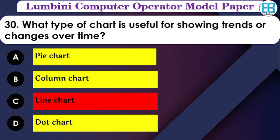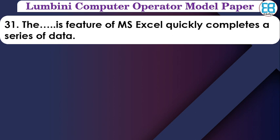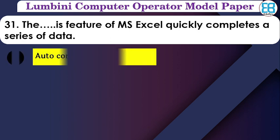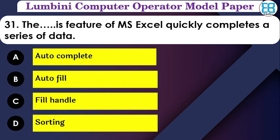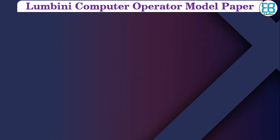What is the feature of MS Excel that quickly completes a series of data? The options are: autocomplete, auto fill, fill handle, sorting. The correct option is auto fill — auto fill quickly and completely fills a data series.